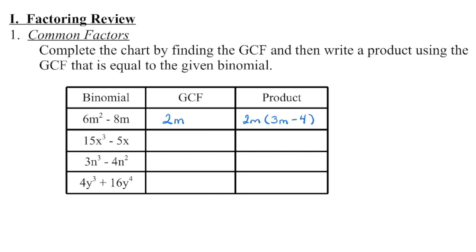Remember, factor means create a bracket — what are the terms we're multiplying together to get back to that original expression? In the next example, we're looking at 15 and negative 5. What's the largest number other than 1 that divides evenly into 15 and negative 5? It is going to be a 5. Then look at the variables: we have x cubed and x. The largest variable that will divide evenly into each of those is x.